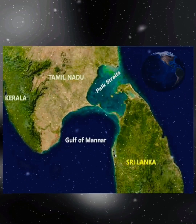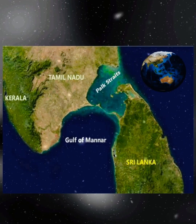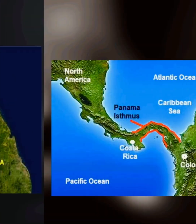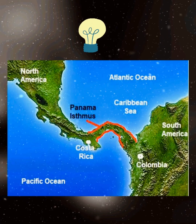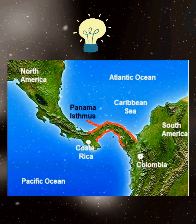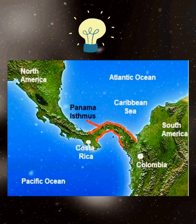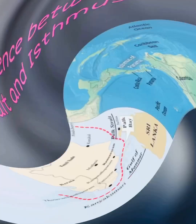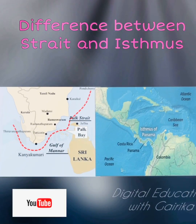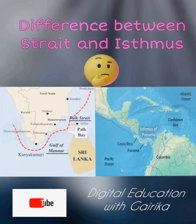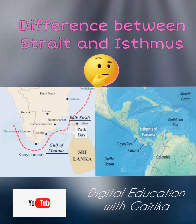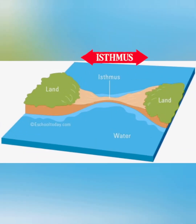We know the name of the strait between India and Sri Lanka is called Palk Strait, and the link between North America and South America is called the Isthmus of Panama. But what is the basic difference between a strait and an isthmus? Let's see.